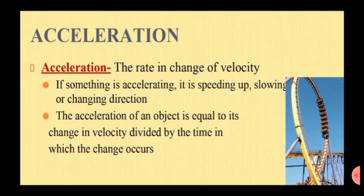The acceleration of an object is equal to its change in velocity divided by the time in which the change occurs. For example, an object was moving north at 10 meters per second; it speeds up and is now moving north at 15 meters per second — the object has accelerated. When a car slows down, when you fall off a bridge, or when a car turns at a corner, these are all examples of acceleration because the direction or speed is changing.